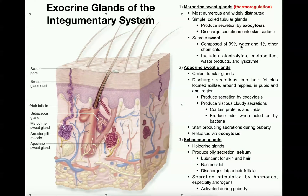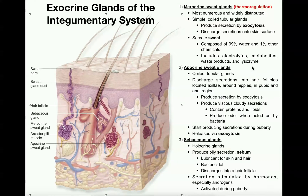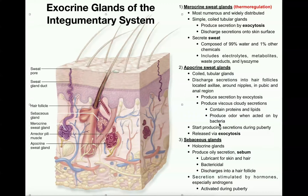Sweat is 99% water, but it does have other chemicals in it, such as ions like sodium — which is why your sweat tastes salty. It also has metabolic waste products such as urea and uric acid, as well as an enzyme called lysozyme, which can kill bacteria on the skin surface and prevent them from infiltrating. Other things like vitamin C can also be excreted this way. Importantly, only merocrine sweat glands are involved in thermoregulation — none of the other glands are.